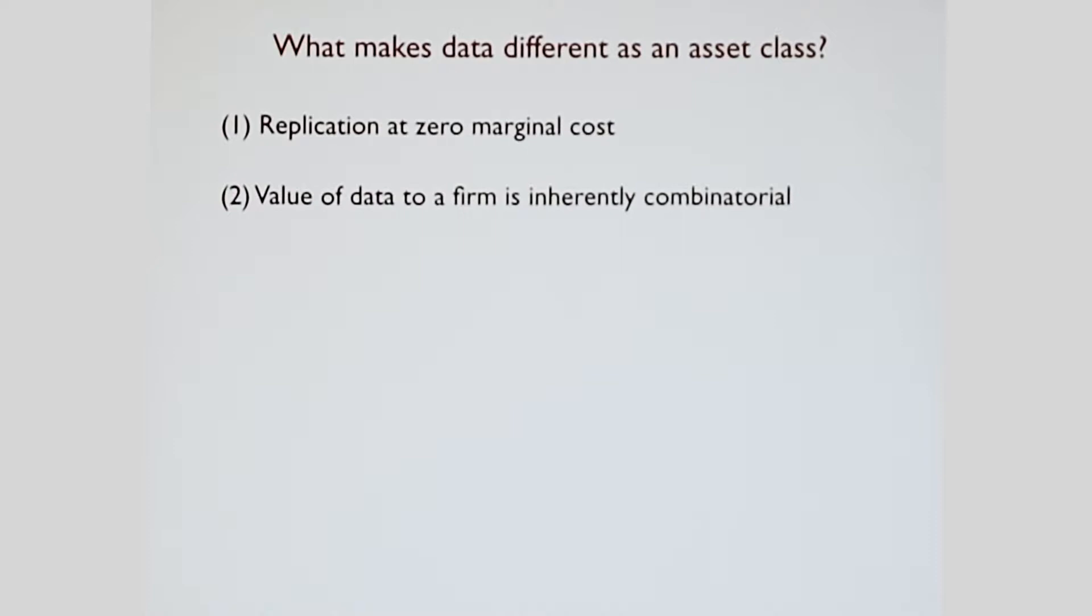Three is that prediction tasks and the value for accuracy vary widely. If I'm a hedge fund trying to predict a financial asset, versus a production agriculture company trying to predict the weather so I can find crop yields, the types of data that are going to be valuable for me, the types of prediction tasks I have, and how much I value accuracy are going to be highly different.